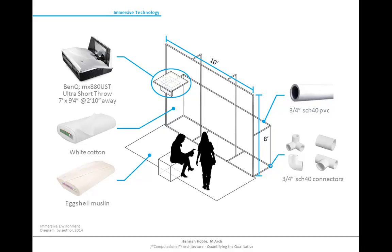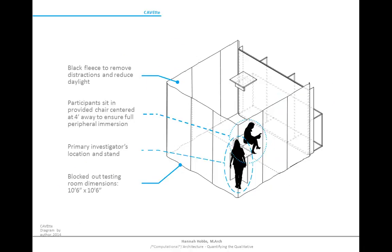We Googled and YouTubed how to make an at-home movie theater, and the design emerged from there. While the last slide depicted details of the immersive technology, this diagram explains the CAVET and the location of the participant and myself when conducting the experiment. For those curious how the name CAVET came about: CAVE is an existing acronym standing for Cave Automatic Virtual Environment. While I did not make up that acronym, I did come up with CAVET because it's little.